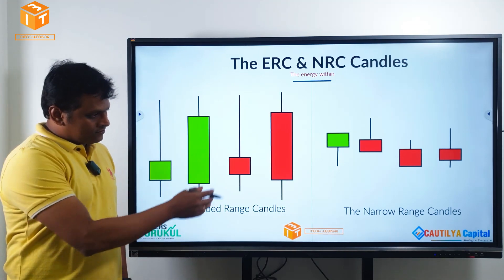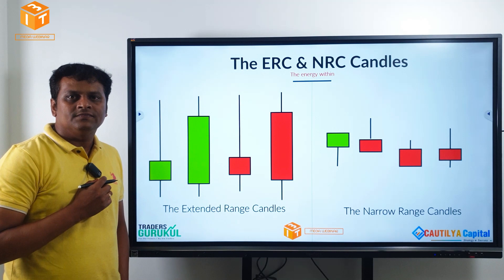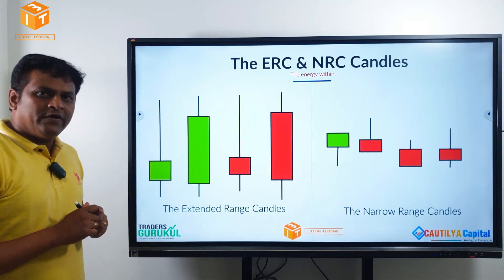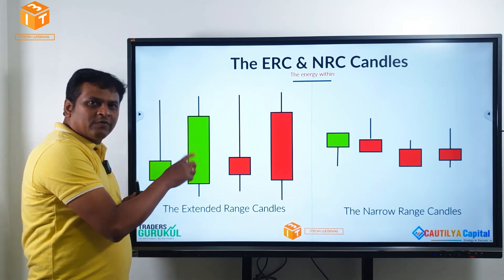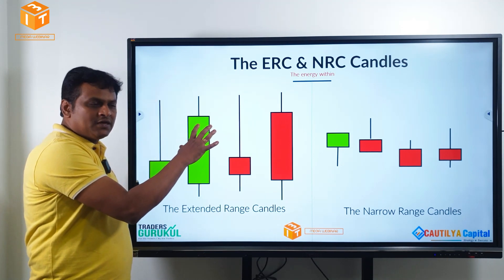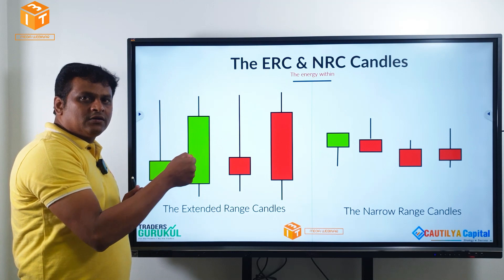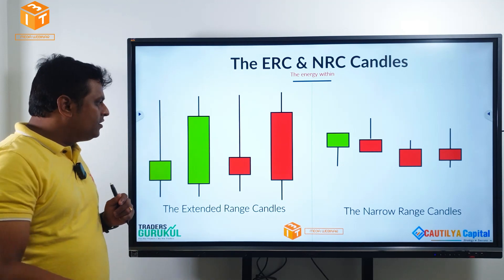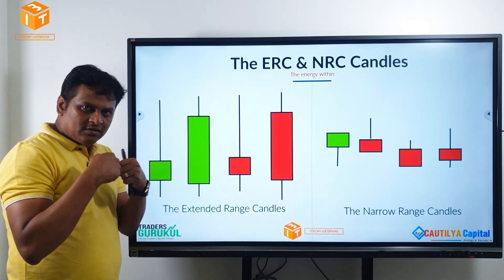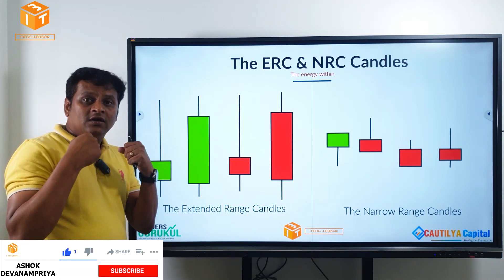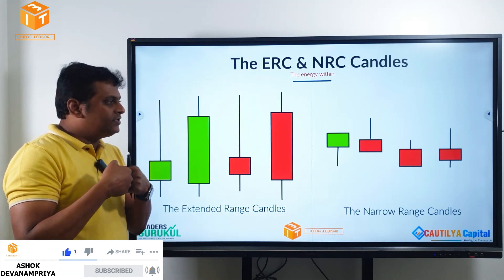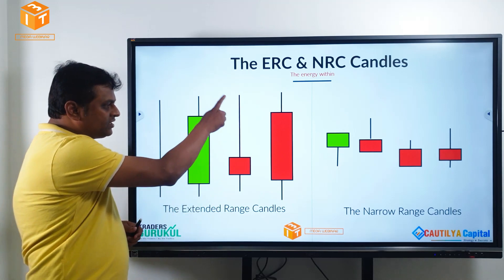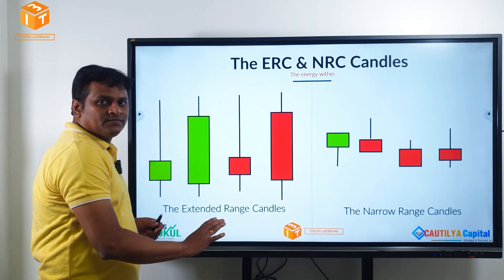Extended range candles, narrow range candles. We already discussed that these kinds of candles are very powerful because of the strong momentum and impulse. It's like a free highway where a buyer or seller is in absolute control — they are completely dominating the opponent. Whereas a base candle is a scenario where there is a tug of war, an equal fight between them, with absolutely no clarity on who is the winner. It's almost a draw match, and in this scenario there is congestion everywhere.